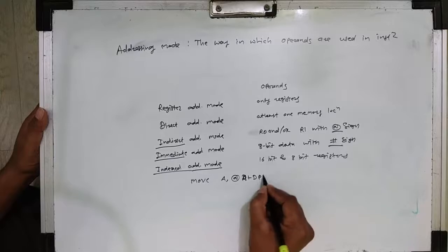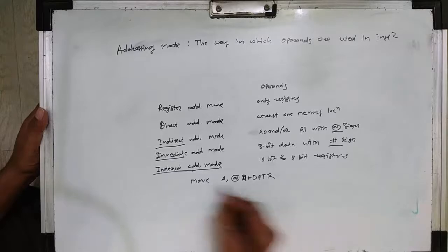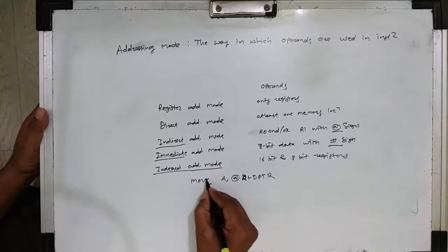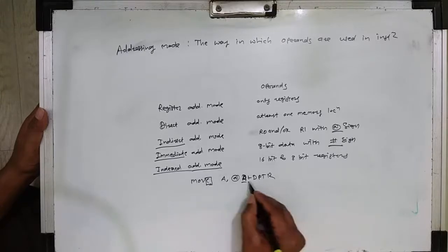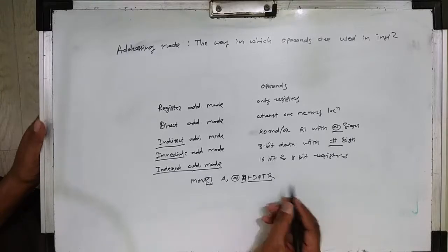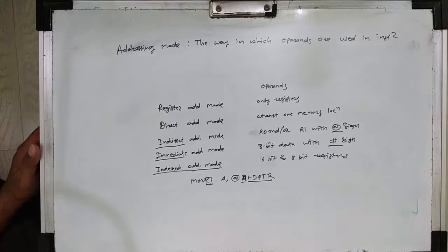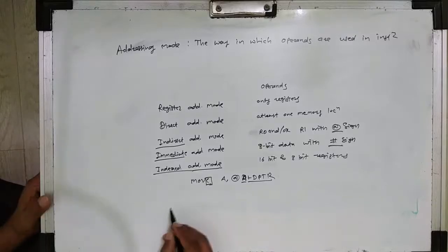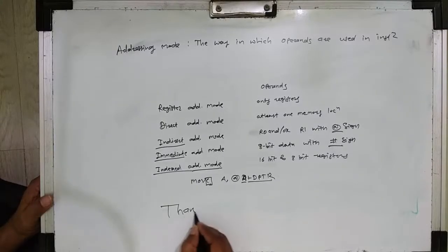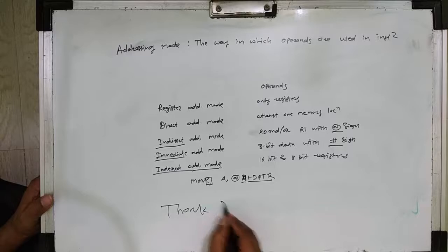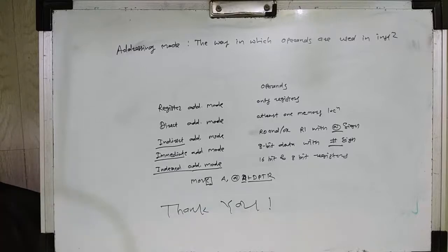An example of index addressing mode: MOVC A,A+DPTR — here C means code byte. This instruction uses index addressing mode, which is used for addressing program memory. Thank you.